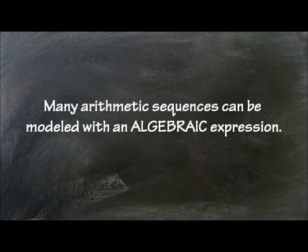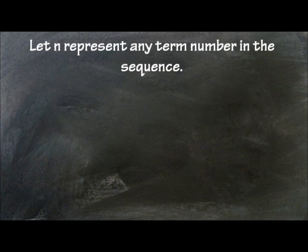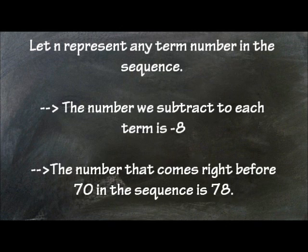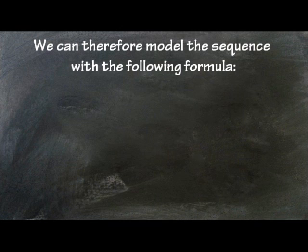Many arithmetic sequences can be modeled with an algebraic expression. Let n represent any term number in the sequence. The number we subtract to each term is negative 8. The number that comes right before 70 in the sequence is 78. We can therefore model the sequence with the following formula: negative 8 times n plus 78.